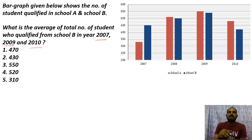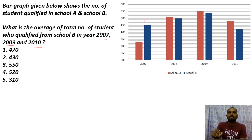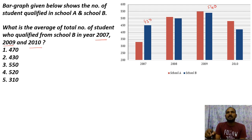So for 2007, 2009, and 2010 — School B is the red color, School A is the blue color. For years 7, 9, and 10, we have three values. 2007 value is 450, 2009 value is 550, and 550 added to 540. Next value added is 400 and 420.